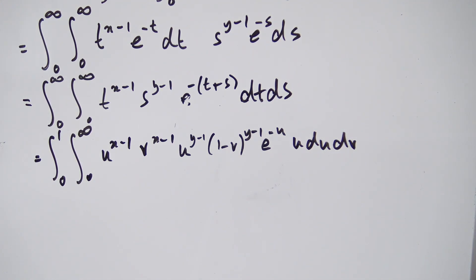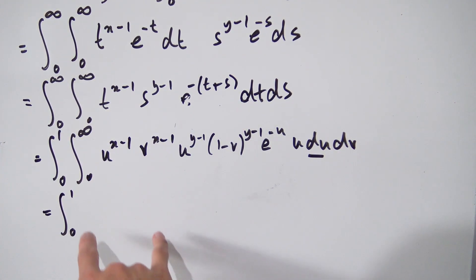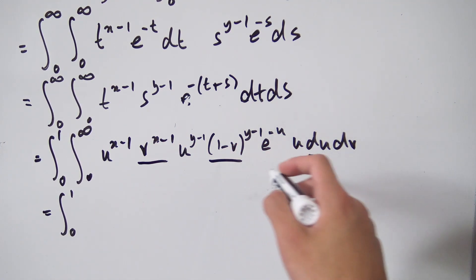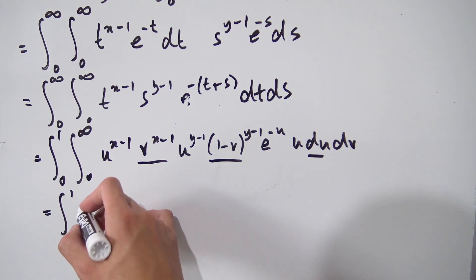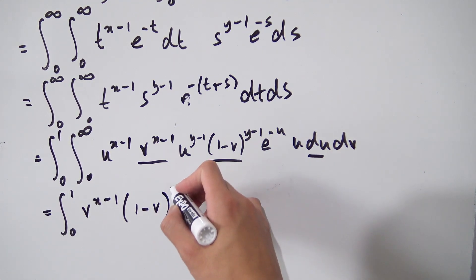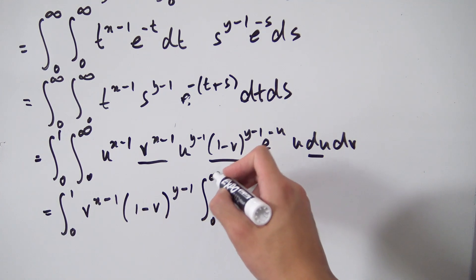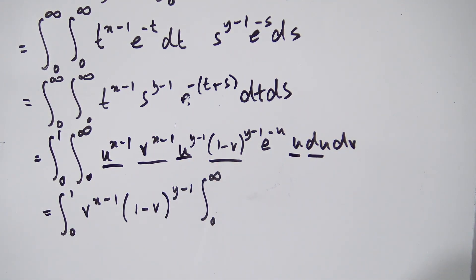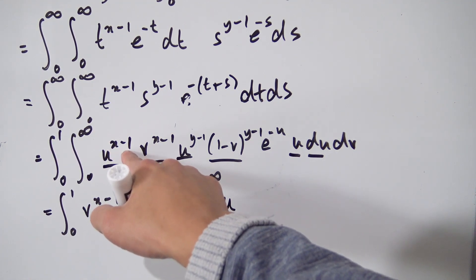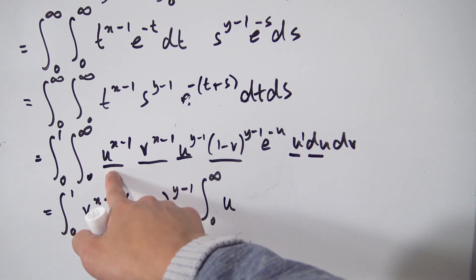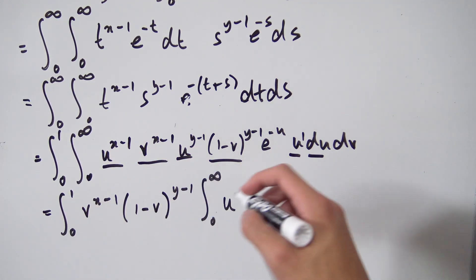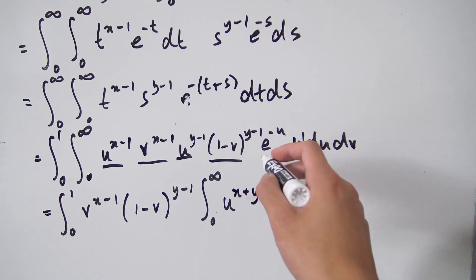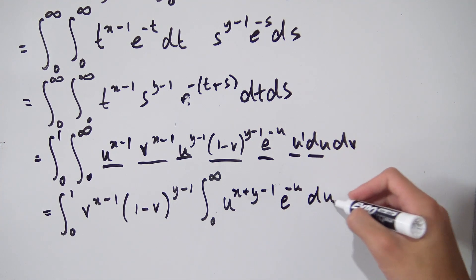We can separate the v-dependent terms outside the inner integral. Pulling the v terms out, we have the integral from 0 to 1 of v to the x minus 1 times (1 minus v) to the y minus 1 dv, multiplied by the inner integral from 0 to infinity. Combining the u powers: u to the x minus 1 times u to the y minus 1 times u gives u to the x plus y minus 1, and we still have e to the minus u du.